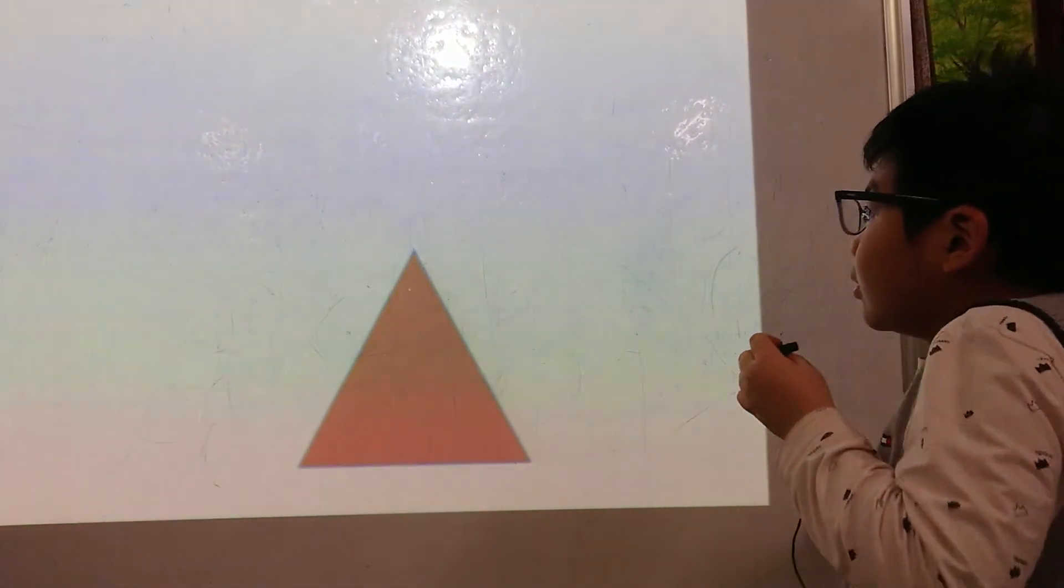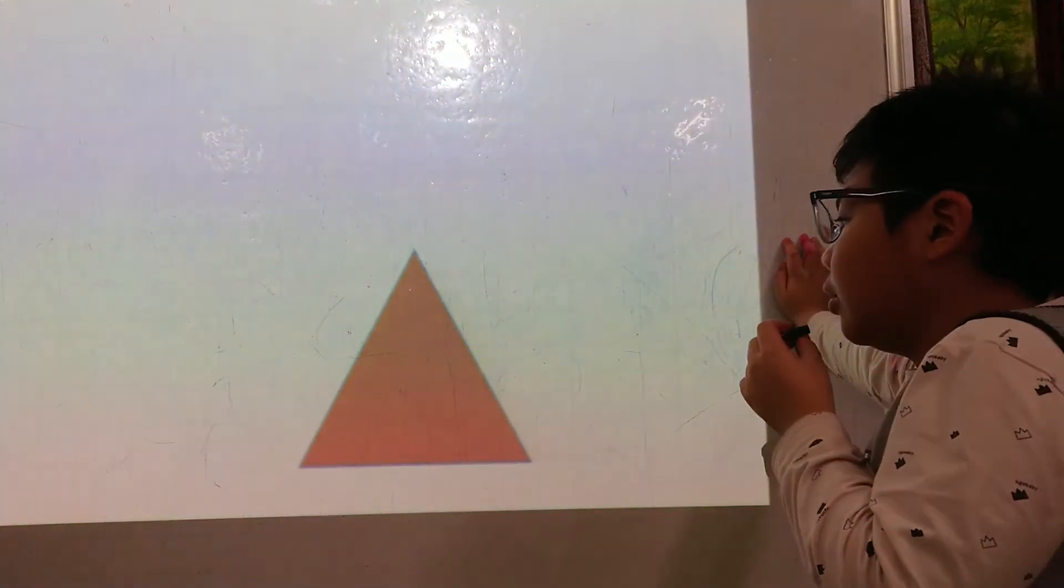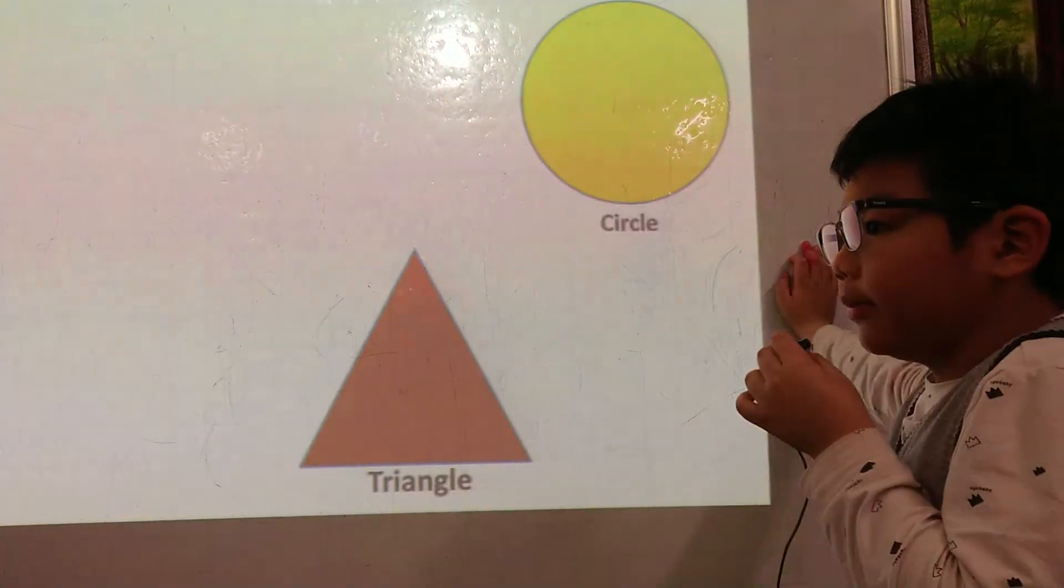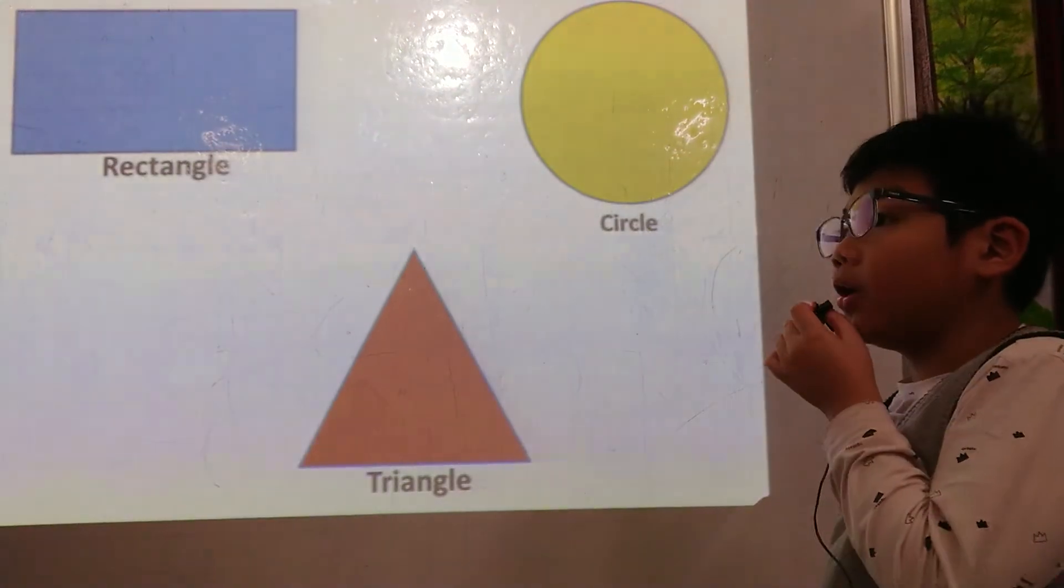What shape is this? It's a triangle. What shape is this? It's a circle. What shape is this? It's a rectangle.